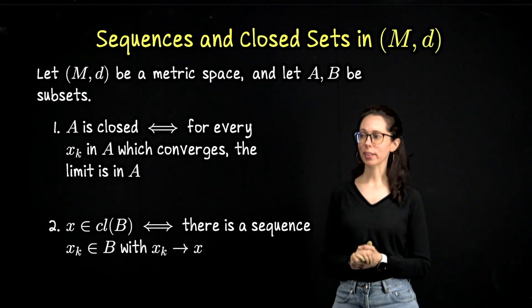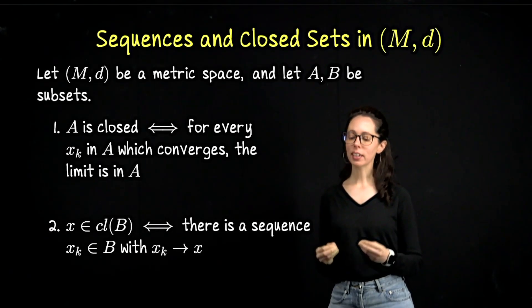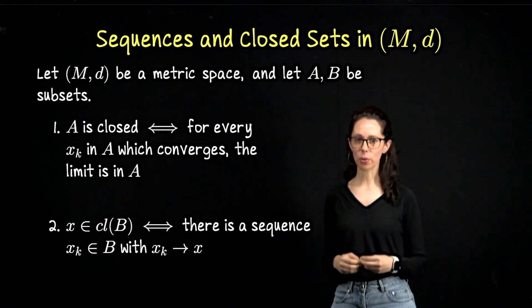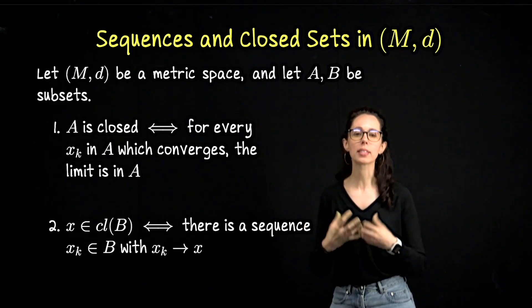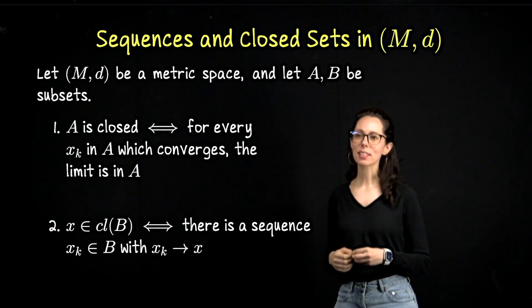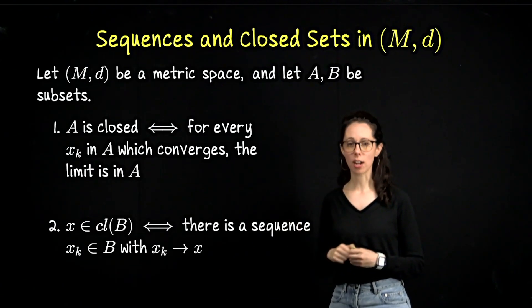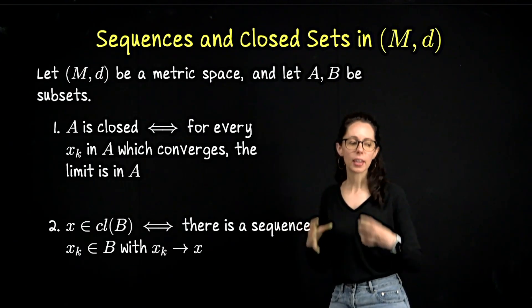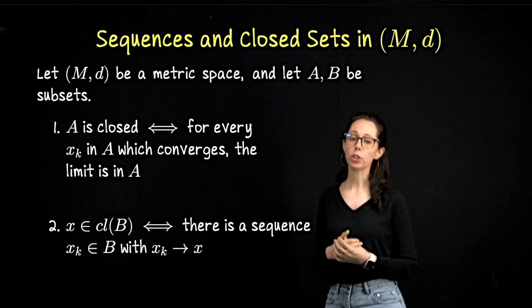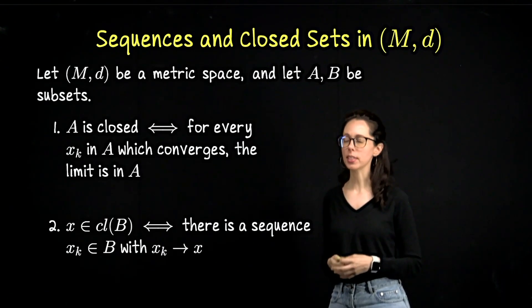The goal of this relatively short lecture is to link sequential convergence to the idea of accumulation points in closed sets. Because as I said in my introductory lecture on sequences in a metric space, sequences are a tool that we can use to try to find topological properties of sets.